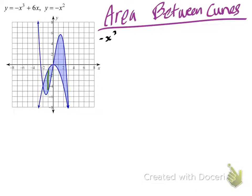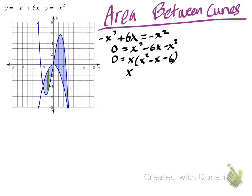-x³ + 6x equals -x². So x³ - x² - 6x equals zero. Factoring out an x gives x times (x² - x - 6).